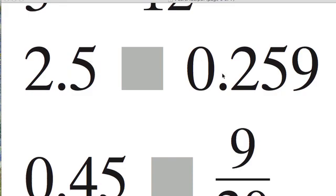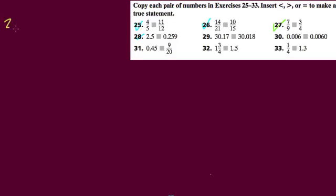I'll write 30.17 versus 30.018. Now this 8, this 1, 8 looks bigger than 1, 7 because 18 is larger than 17. But, in fact, this 1 and this 7 are in the same place value.